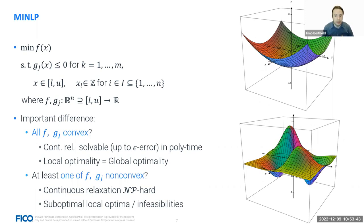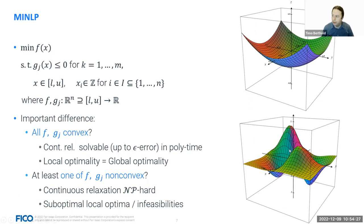Continuous NLPs where all constraints and the objective are convex are almost as easy as LP from a theoretic standpoint, though technically somewhat harder in practice. A key reason is that from convexity, local optimality implies global optimality. The fun starts when at least one function is non-convex, because all of a sudden you can have local optima or even local infeasibilities. With non-convexities, the straightforward continuous relaxation no longer helps you — non-convexity can easily create disconnected areas already for the continuous part.